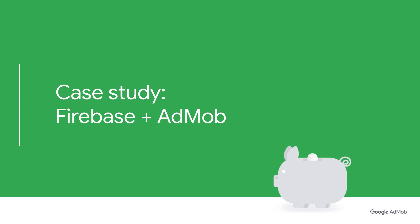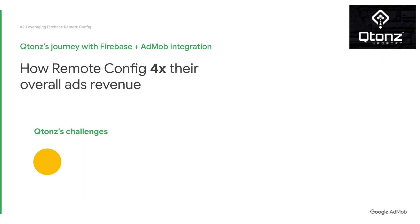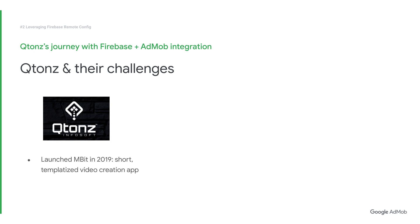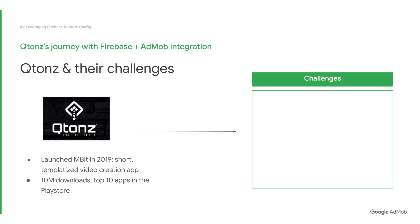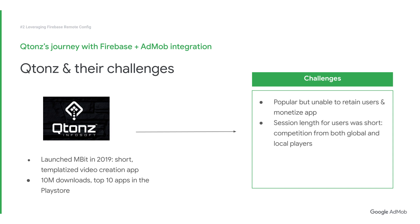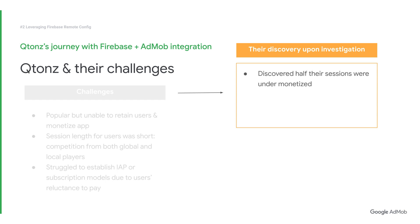Let's look at how one of our partners, Qtons, managed to grow their business with Remote Config. In 2019, Qtons InfoSoft launched Ambit Music, a short-templatized video creation app. With over 10 million downloads, Ambit quickly became one of the most popular video creation apps in India and is currently among the top 10 apps in its category on the Play Store. However, Qtons faced many challenges along the way. It was difficult to keep users engaged for longer periods due to global and local competition and the changing expectations of Indian users.